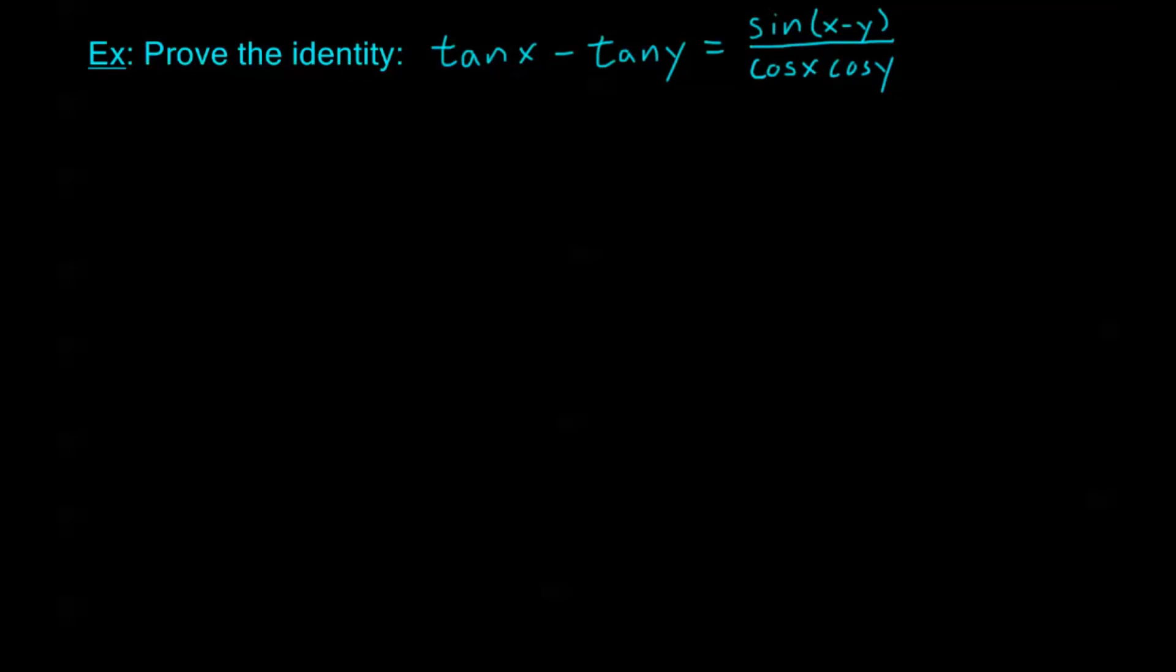Let's take a look at another one. Prove the identity tangent x minus tangent y equals sine x minus y over cosine x cosine y. I usually say try to start with the most difficult side, but here, both of these are pretty complicated. And you're going to do about the same amount of work no matter which side you start with, but in class, I usually start from the right-hand side. So in this video, I'm going to start from the left-hand side.